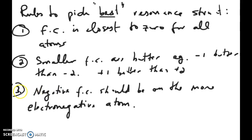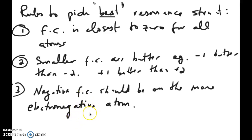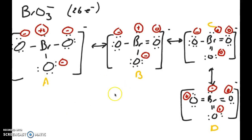The third rule is that if you have negative formal charges, they should be placed on the more electronegative atom. You don't want a less electronegative atom to have a negative formal charge while a more electronegative atom has none — that wouldn't make physical sense. Now let's go back to the bromate resonance structures and apply these rules to pick the best one.